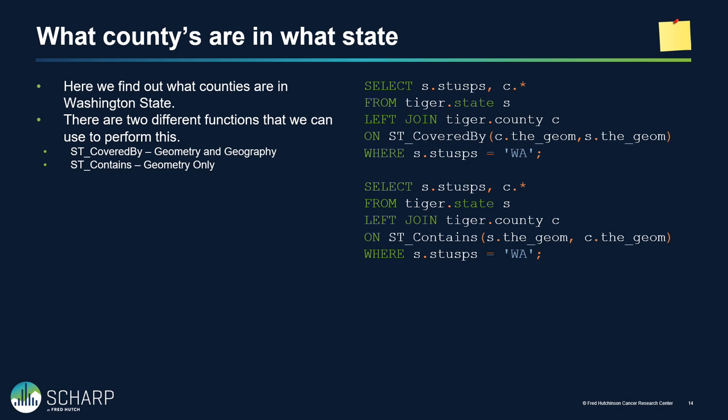Looking at the TIGER dataset, here's a simple query: take state data, join it to county data, and ask what counties are covered by Washington State — it will list all counties in Washington. That's how simple it can be to query GIS data. You can also use ST_Contains, which gives you the same set of results.